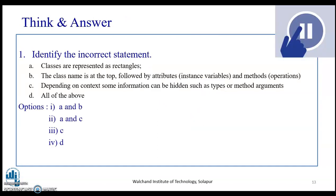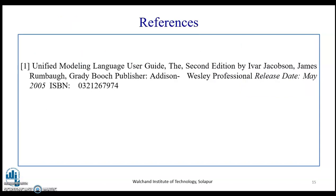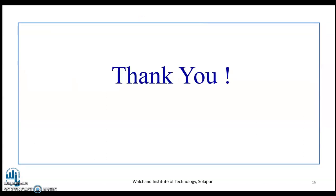Now let us pause and review some questions. Identify the incorrect statements: classes are represented as rectangles; the class name is at the top followed by attribute instances and methods; depending on the context, some information can be hidden such as types or arguments. The correct answers are A and B. Also: attributes define the properties of the object — true or false? The answer is true. These are some of the references used for this video. Thank you for your patient listening.